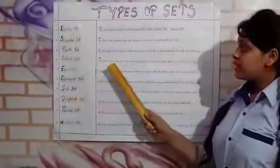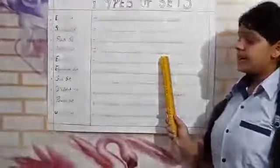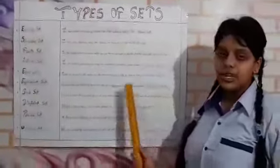Infinite Set: the set which contains elements which are unlimited in number and cannot be counted is called the Infinite Set. For example, {1, 2, 3, and so on}.